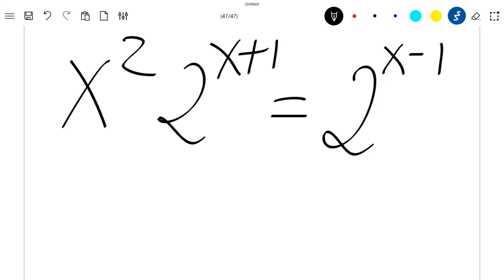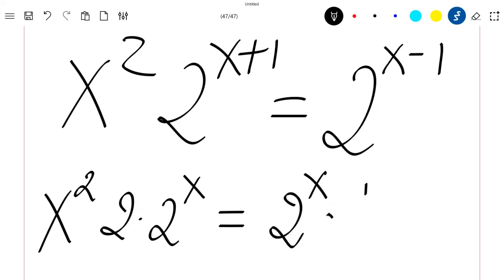Let's just quickly solve this. Our equation can be written as x square times 2 times 2 power x equal to 2 power x times 1 divided by 2.